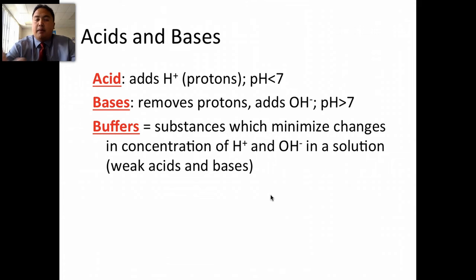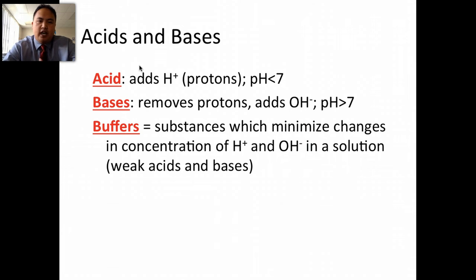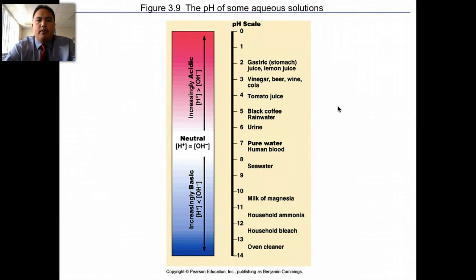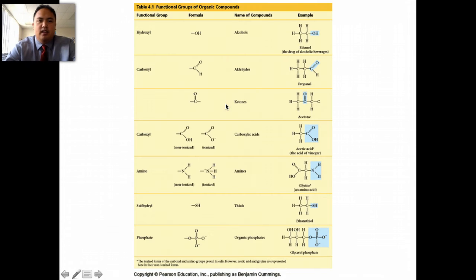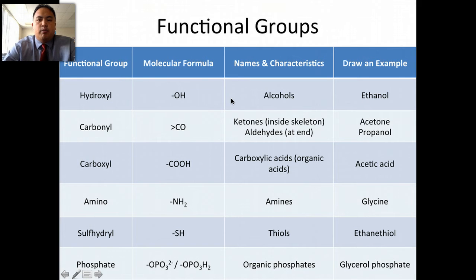After that, we moved on to a brief discussion about acids and bases. Acids are solutions that have more H⁺ ions and a pH less than 7. Bases have more OH⁻ and pH levels greater than 7. Here's an example table we showed you before of how the pH scale looks. You need to know examples of some acids and bases and where they fall on the pH scale. We also skipped over functional groups — we'll talk about those more in class.